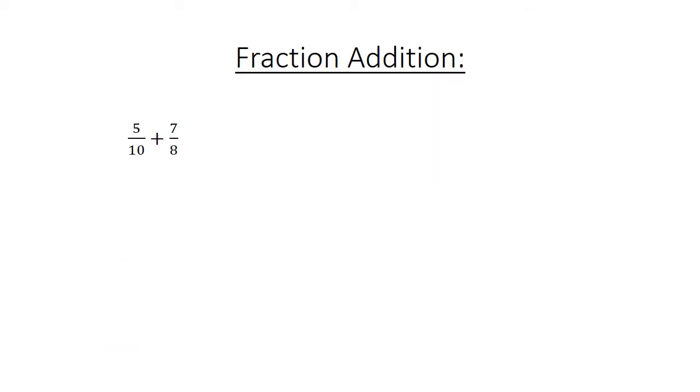Fraction addition. 5 over 10 plus 7 over 80. Find the lowest common multiple, 40. 20 over 40 plus 35 over 40 equals 55 over 40, equals 1 and 3 over 8.